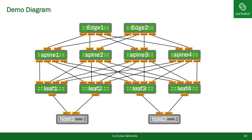For this demo we'll be using a spine-leaf topology that is recommended for the data center. I will use four leaf switches, four spine switches, two Ubuntu hosts, and two edge devices — also sometimes referred to as CE, or customer edge devices. All the network nodes will be run in Cumulus VX, short for virtual experience, and available on cumulusnetworks.com for free.